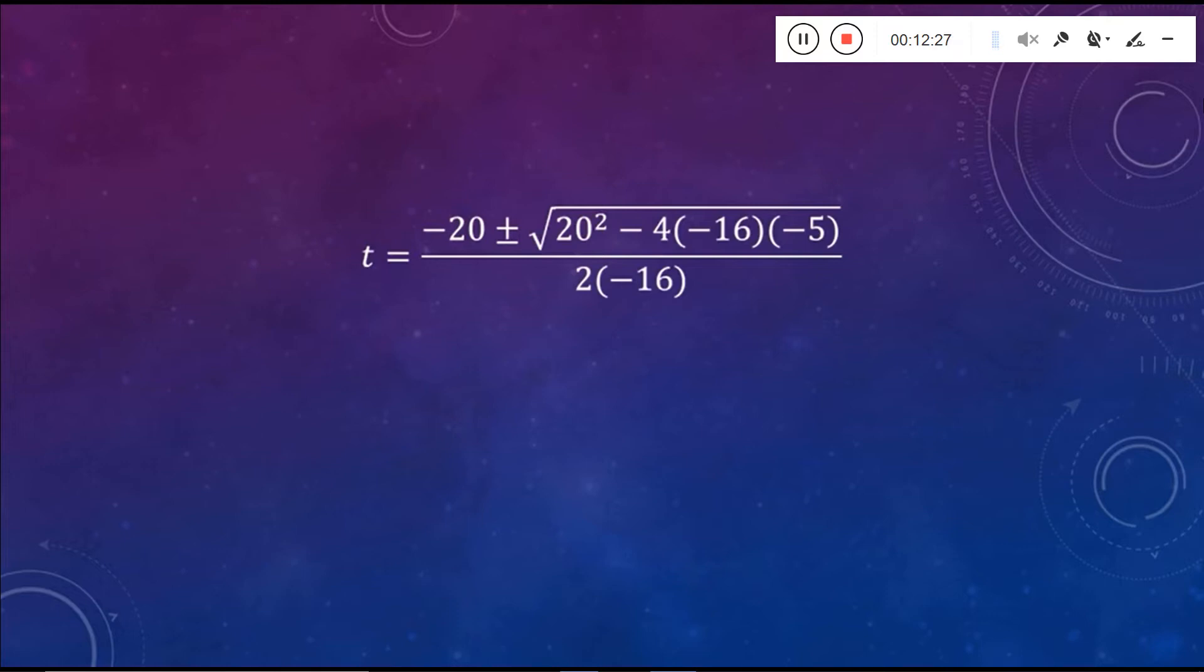All over 2 times negative 16 or negative 32. Negative 4 times negative 16 is 64. 64 times negative 5 is negative 320. 20 squared is 400. 400 minus 320 gives you 80. And that's underneath your square root. So we have negative 20 plus or minus the square root of 80 all over negative 32.